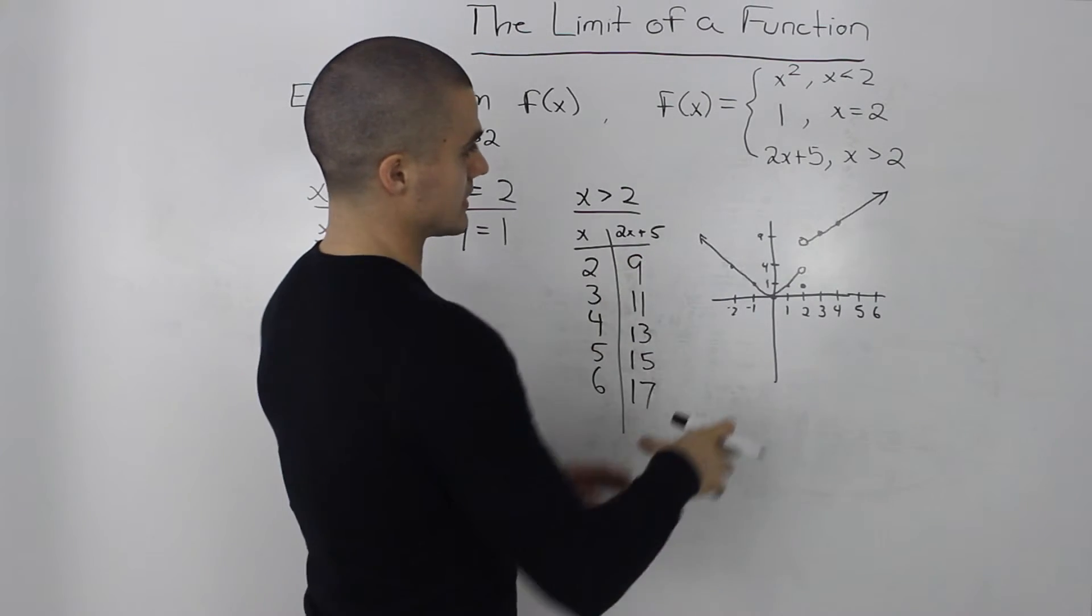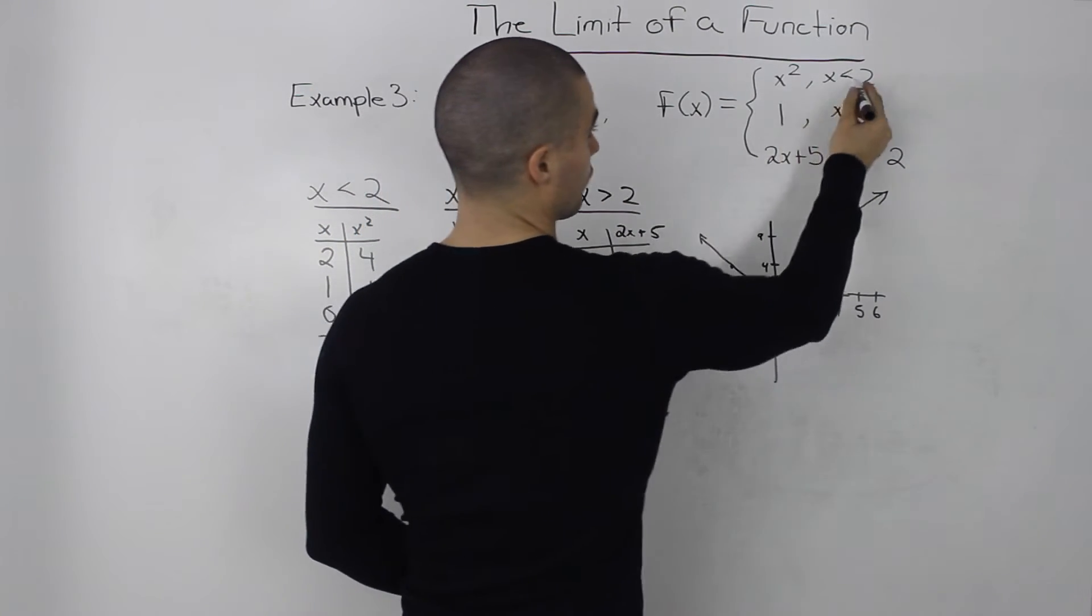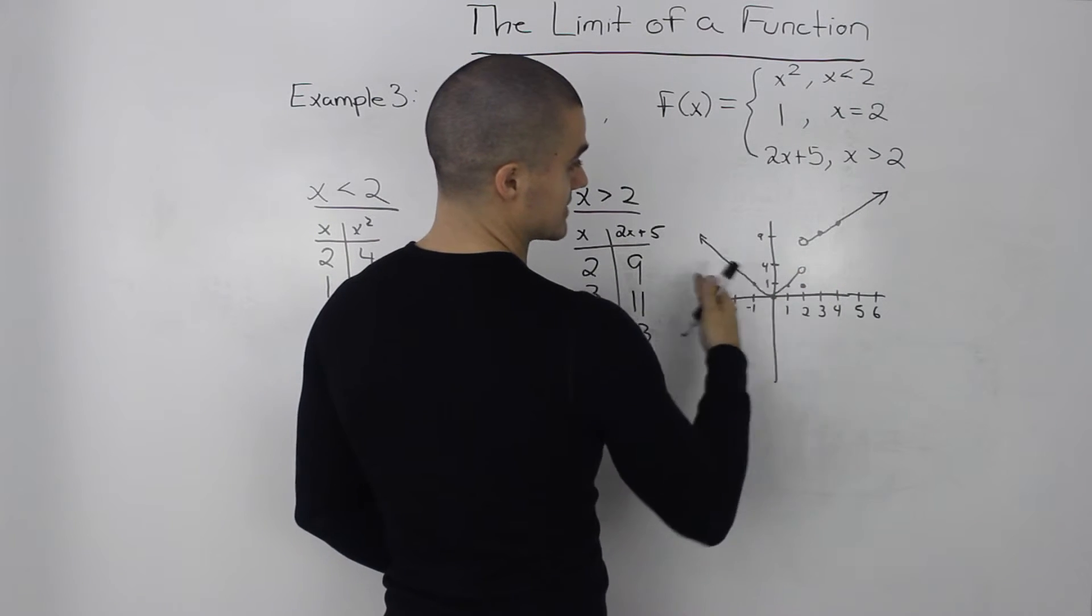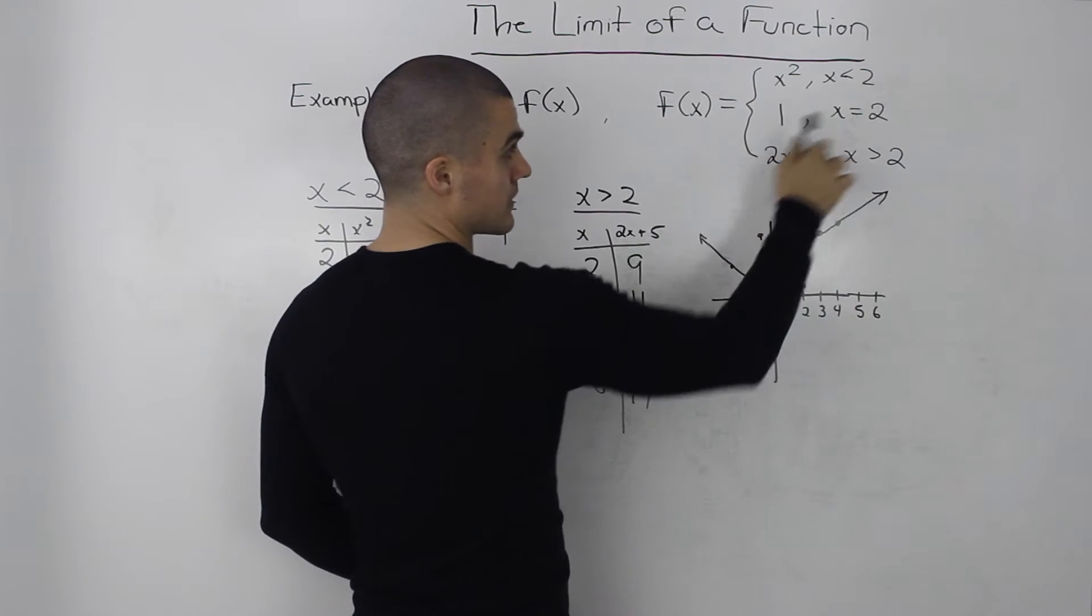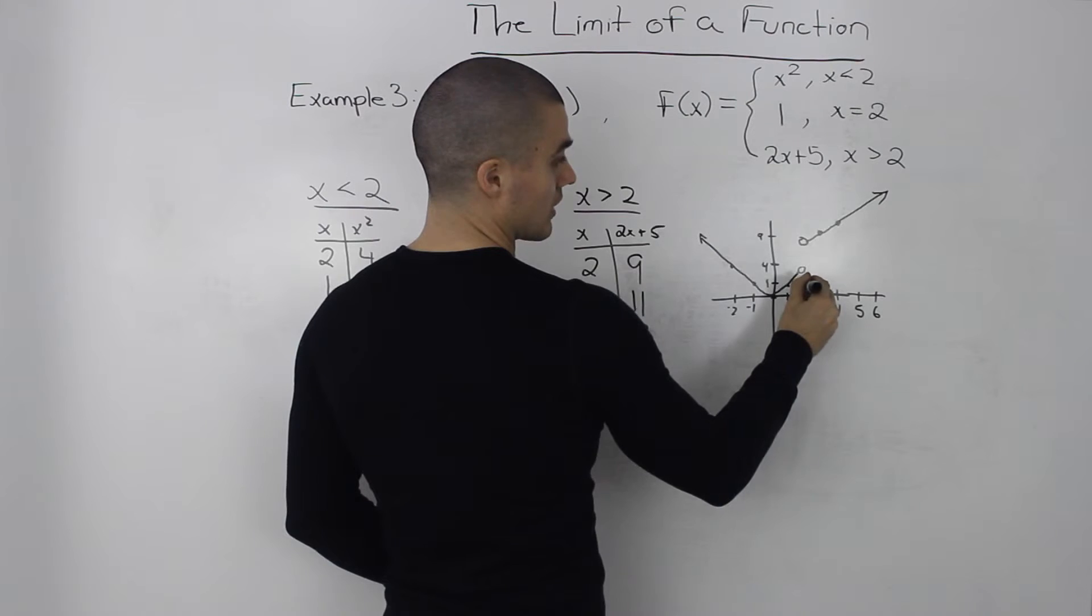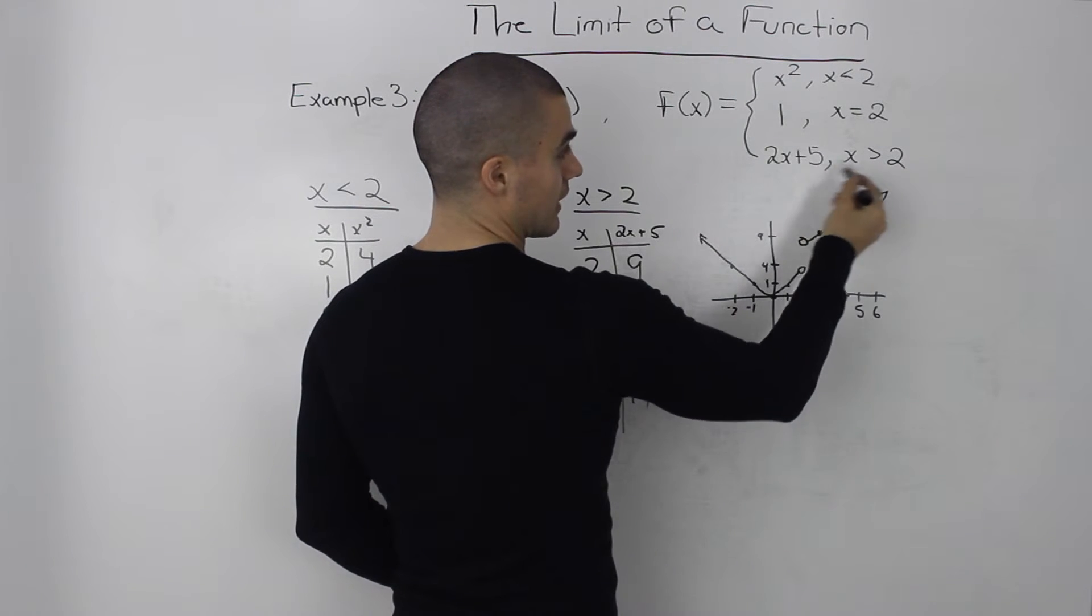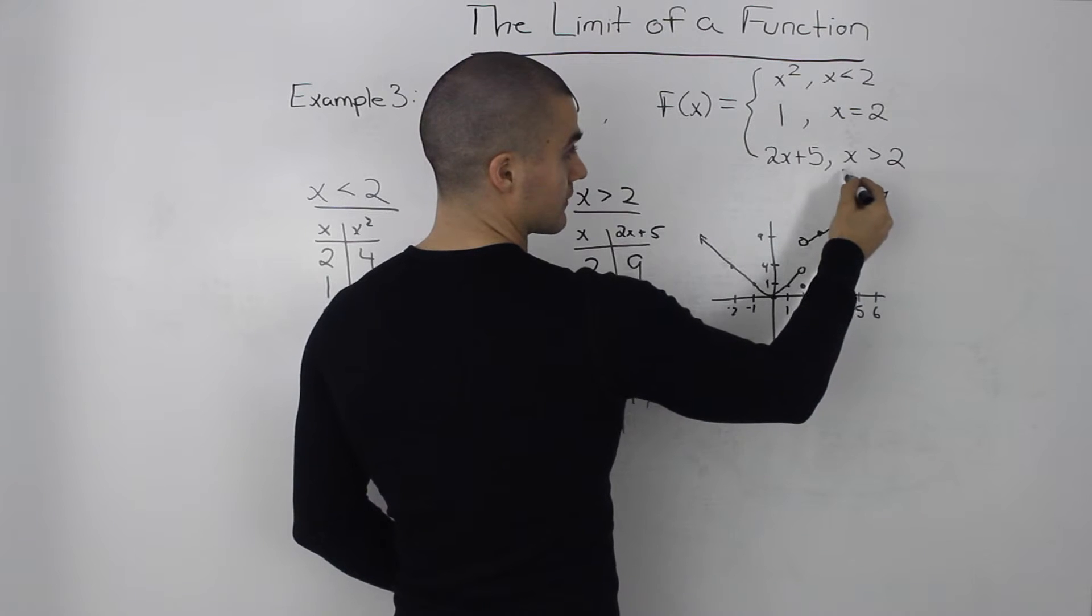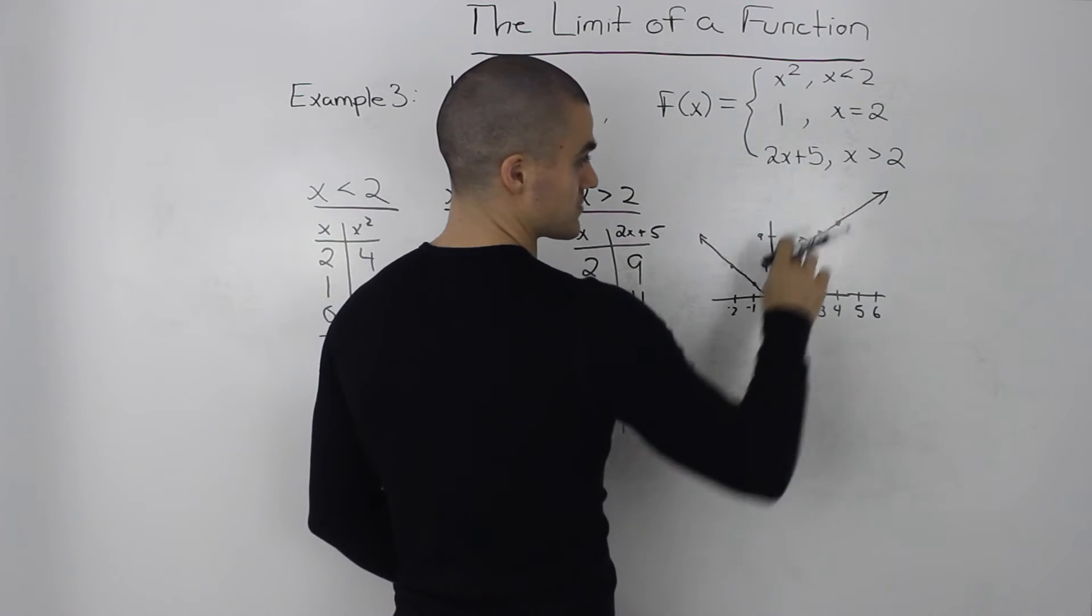Okay so let's review this graph in terms of the piecewise function we were given. So for x values less than 2 the y values are defined by x squared. At an x value of 2 the y value is 1 which is just a dot there. And then at x values that are greater than 2 the y value is defined by 2x plus 5 which is just a line.